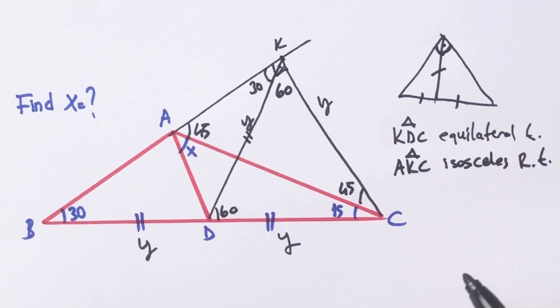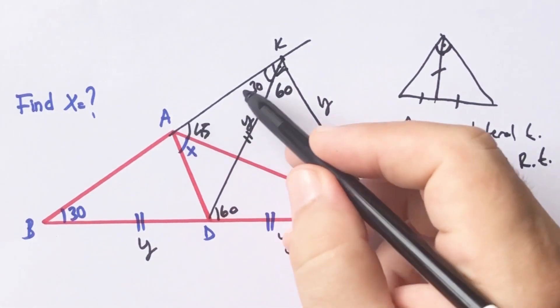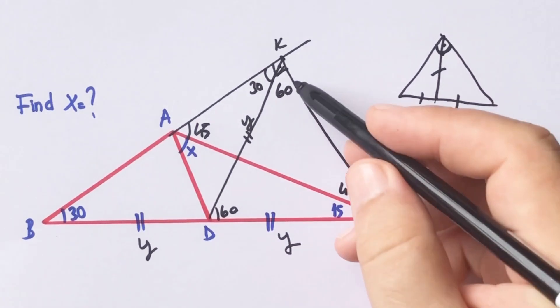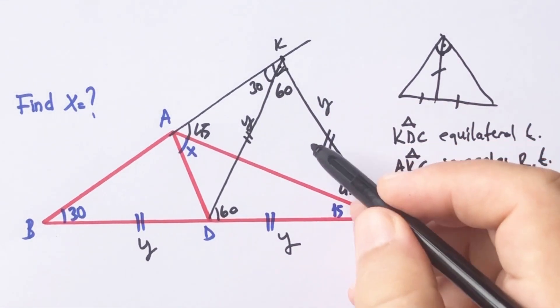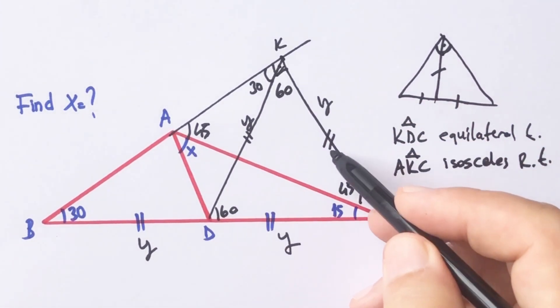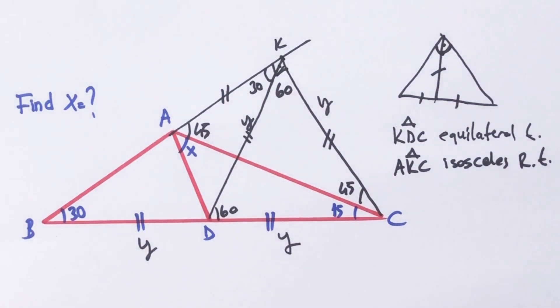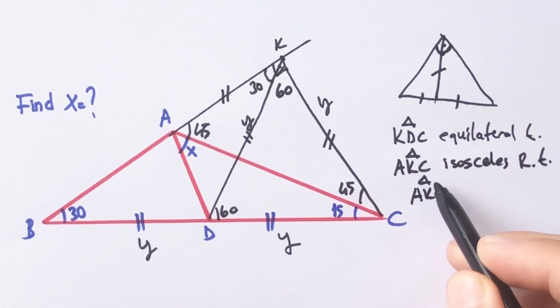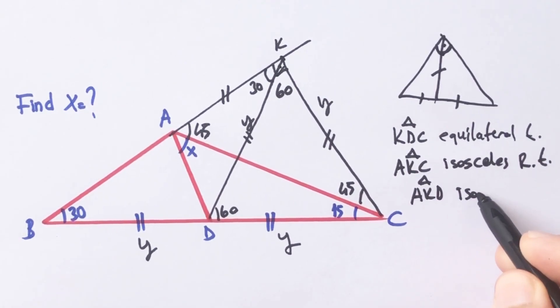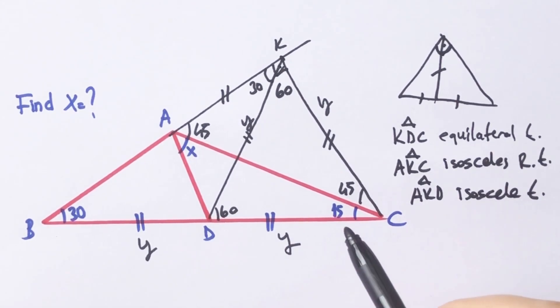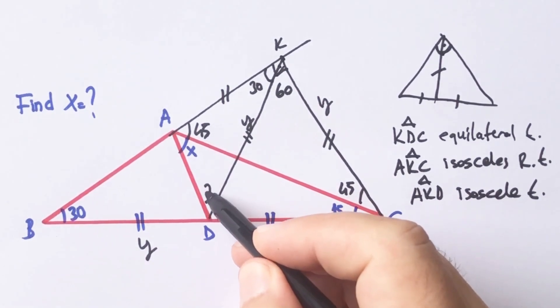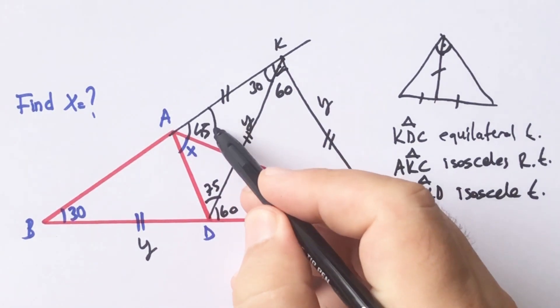Therefore, ak must be equal to kc. As a result, if you notice that akd triangle is also an isosceles triangle. So these base angles must be 75 degrees.